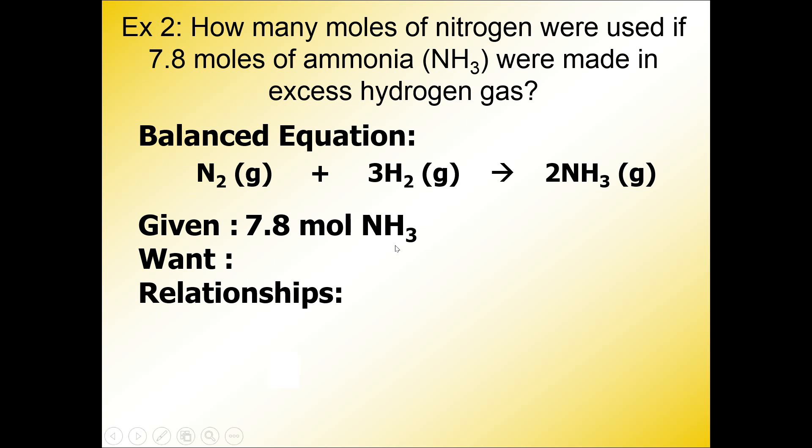The want in the problem is the question: how many moles of nitrogen? So there is my formula for nitrogen and my unit, moles of N2. Now, I noticed that the question says in excess hydrogen gas, but that's just extra information. It has to do with the equation itself, but not with the actual calculation, so you can ignore that part for the calculation portion.